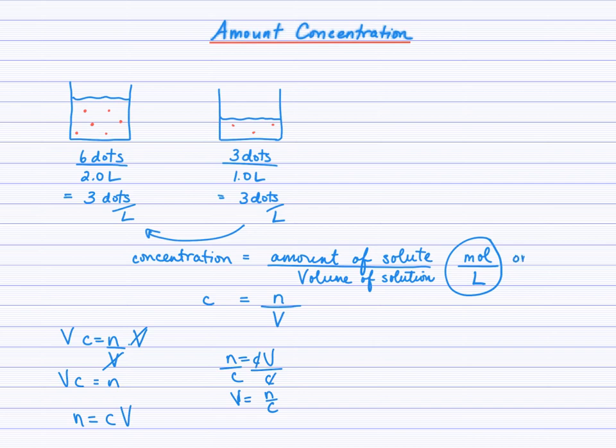Just make a point here that you may also see the units of concentration written as a capital M. For example, c equals 1.0 capital M and that has the exact same meaning as 1.0 moles per liter. So it's just faster to type, faster to write, and you'll see that in different sources.